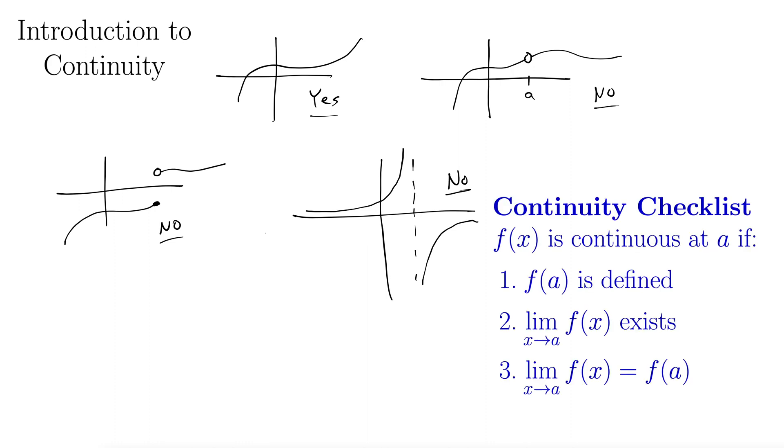For the calculus definition of continuity, we will use this continuity checklist. And what it says is, it says a function is continuous at a point a if, and then it gives three different requirements. The first one has to be defined at a, so a has to be in the domain of the function, basically.